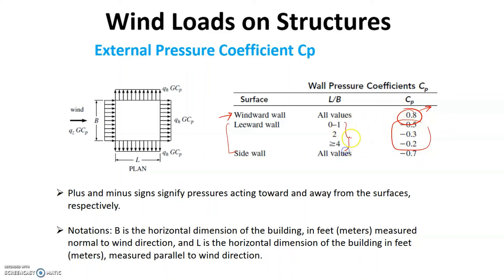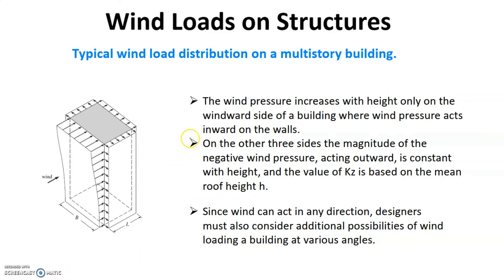On the leeward wall, this value varies from minus 0.25 to minus 0.5. This is a function of the ratio L over B, which is the length or width of the plan dimensions of the building. You can see this is the wind direction, and you see these suction pressures acting outwards. Only the wind pressure on the windward side varies with height, while all the other pressures are constant with height.